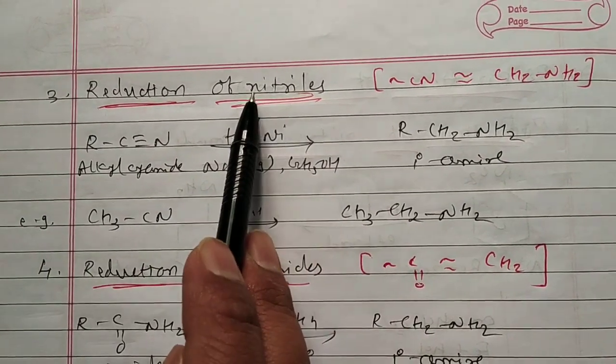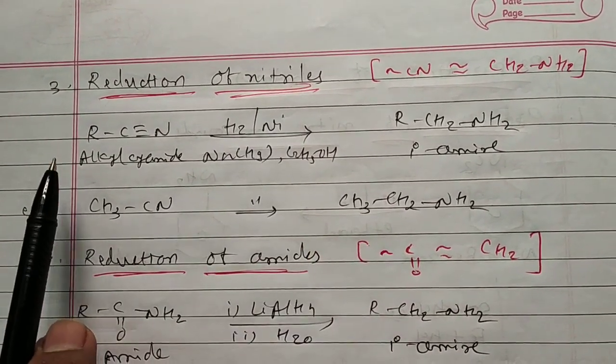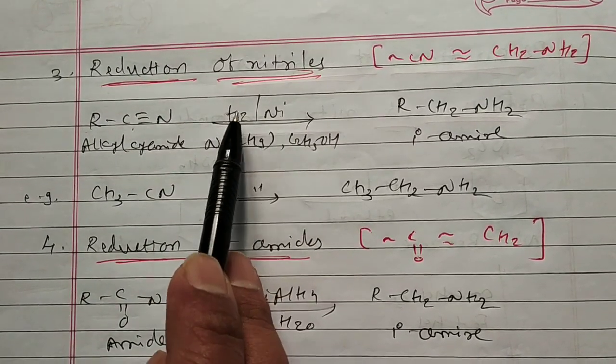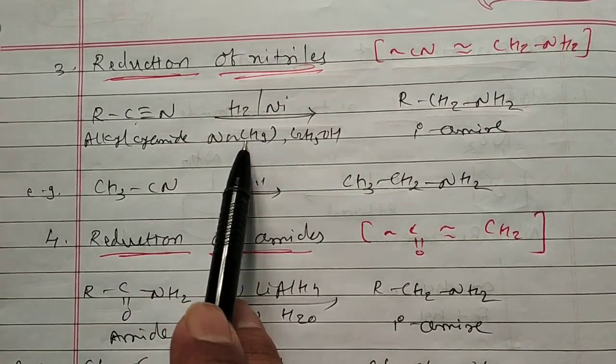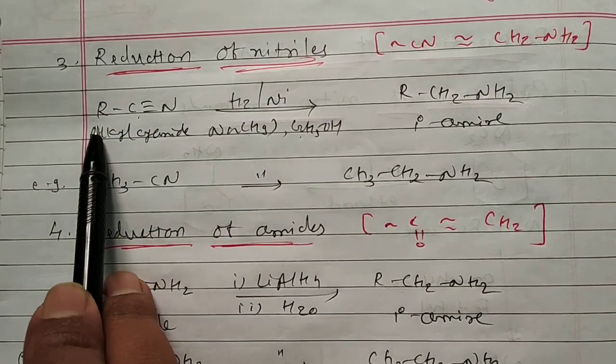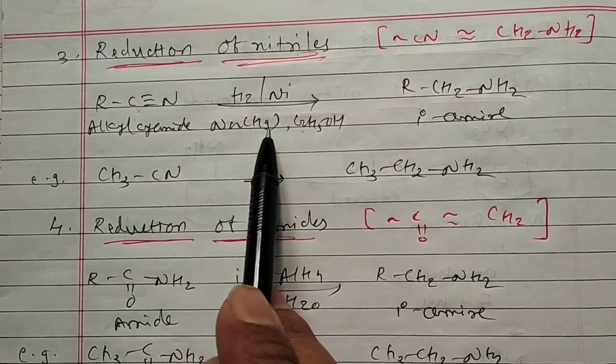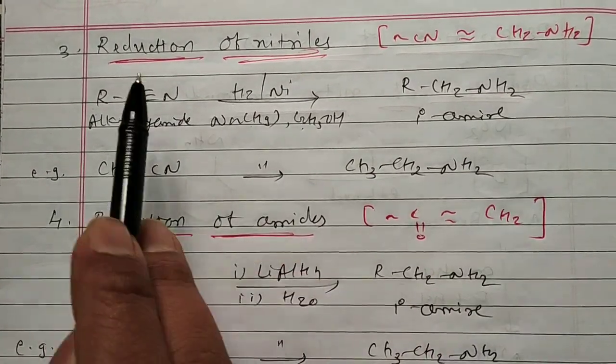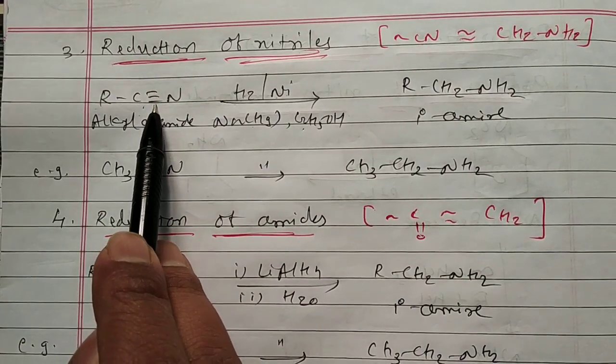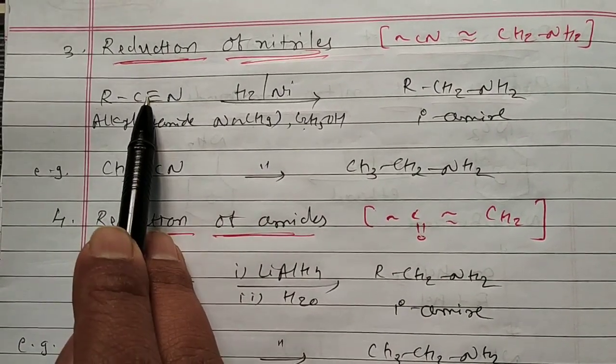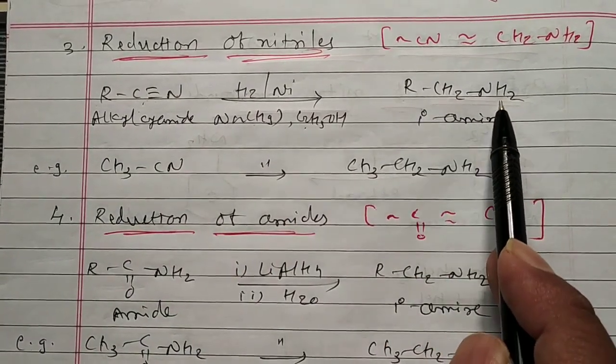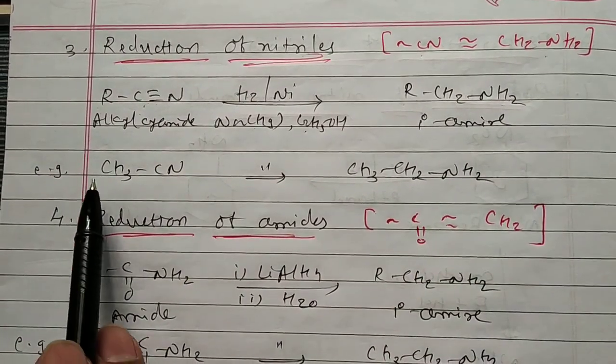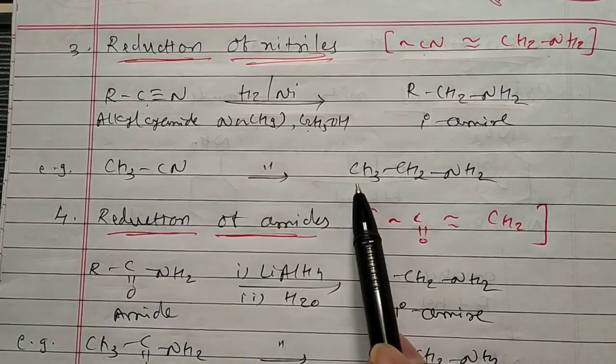Next we have reduction of nitrile. Nitrile means CN-containing compound. Key reaction which is specifically RCN in the presence of H2/Ni. Once again, a mild reducing reagent H2/Pd or Ni, sodium amalgam in the presence of ethanol. So once again, RCN when treated with H2/Ni in the presence of sodium amalgam ethanol, the CN is converted into CH2-NH2. Simple reduction takes place. This double, triple bond, these two bonds will break. First one bond breaks, H-N-H will form. Again one bond breaks, H-N-H will form. Finally you get R-CH2-NH2. So what to remember? Wherever there is CN, there will be CH2-NH2. Example: CH3CN undergoes same reaction, you get CH3-CH2-NH2.